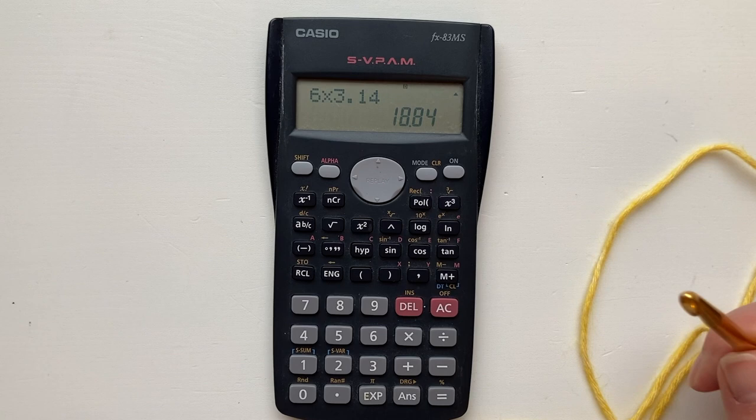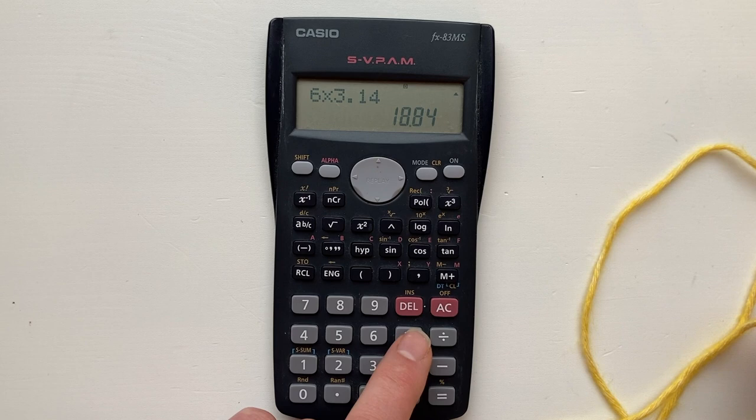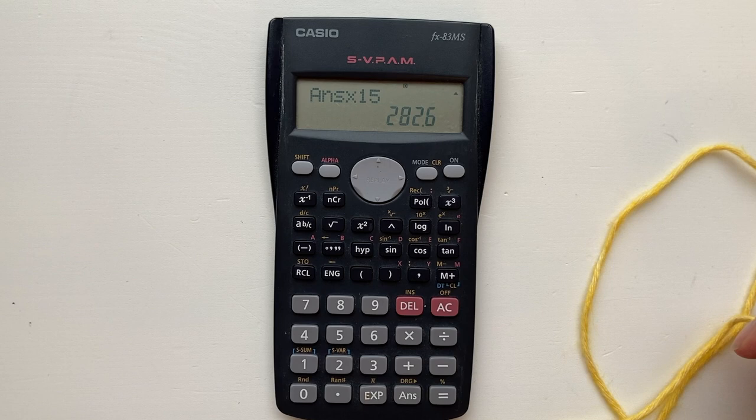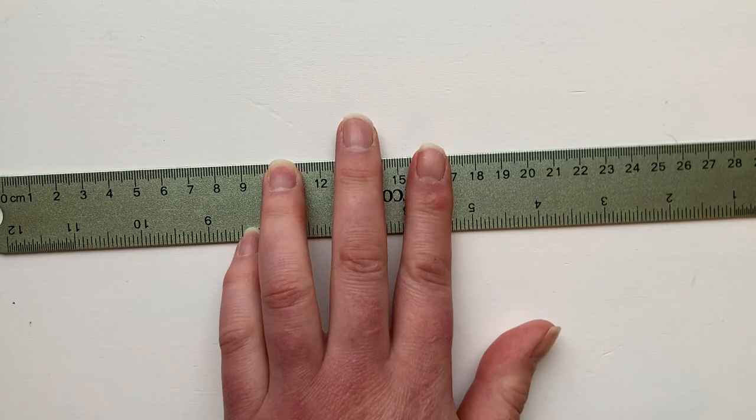Now we want to say cast on 15 stitches so we multiply that by 15 and that tells us we'll need 282 millimeters of yarn. Now centimeter is a little bit more practical so if we just divide by 10 it tells us we need 28 centimeters. It's always good to round up so about 30 centimeters give or take. So we'll use exactly 30 centimeters to create our 15 stitches.